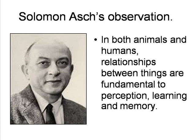Solomon Asch, a former student of Wertheimer, later observed that this illustrated a general rule: that animals and humans learn nearly everything in terms of relationships. This object is on top of that one; this object is between those two; this object is bigger, smaller, earlier, later than the other, and so on. Relationships were key to perception, learning, and memory — a theme which we will continue to examine in the next video.